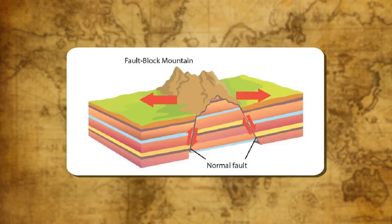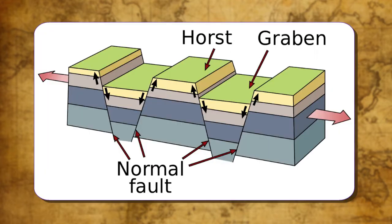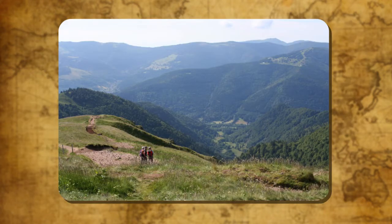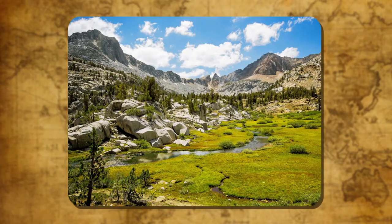Block Mountains are formed when a mass of land was pushed up between parallel cracks or faults in the earth's crust, or by the sinking of land around them. These are usually steep-sided and flat-topped. The uplifted blocks are termed as Horsts and the lowered blocks are called Graben. Black Forest in Germany, Vosges in France and the Sierra Nevada in California are typical examples of block mountains.